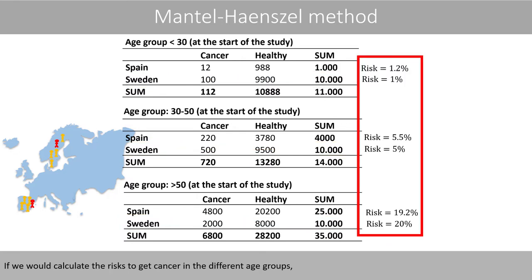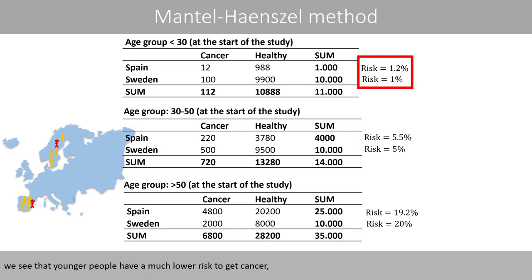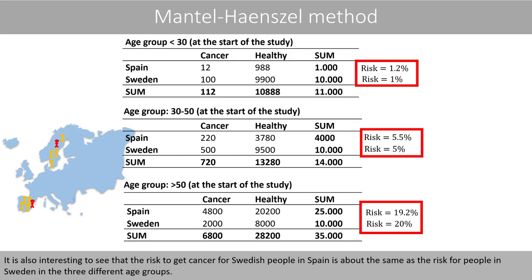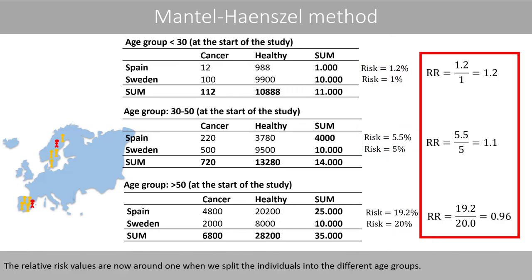If we calculate the risk to get cancer in the different age groups, we see that younger people have a much lower risk compared to older people. It is also interesting to see that the risk to get cancer for Swedish people in Spain is about the same as the risk for people in Sweden within each age group. The relative risk values are now around 1 when we split the individuals into the different age groups.